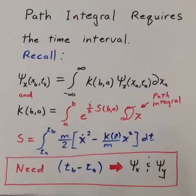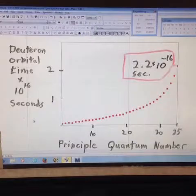We can calculate the deuteron orbiting time given the most probable separation and the principal quantum number. This graph shows the orbiting time as a function of principal quantum number calculated for the most probable deuteron separation.